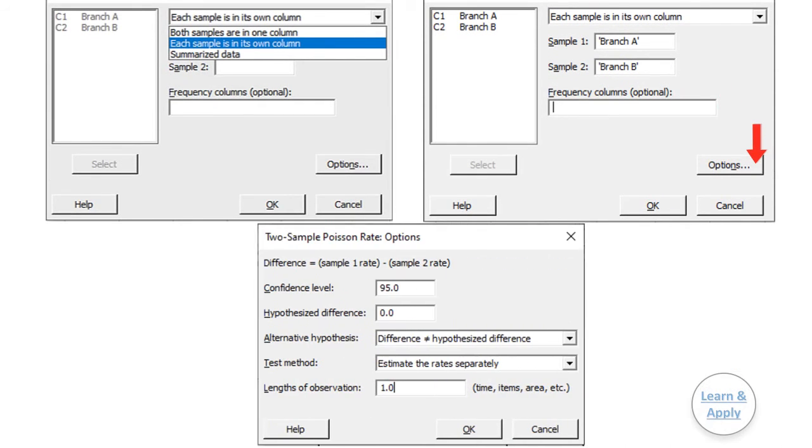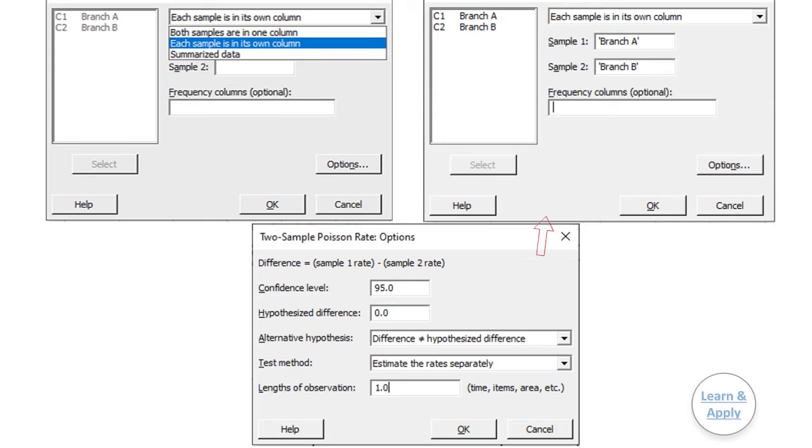In Options, the confidence level is 95%, the hypothesized difference is 0, the alternative hypothesis is difference is not equal to hypothesized difference, test method as estimate the rates separately, and length of observation is 1. As a default, keep them as it is and click OK. Click OK in the main dialog box to get the results. We will get the results of analysis in the session window.